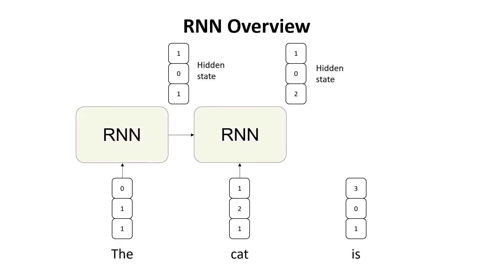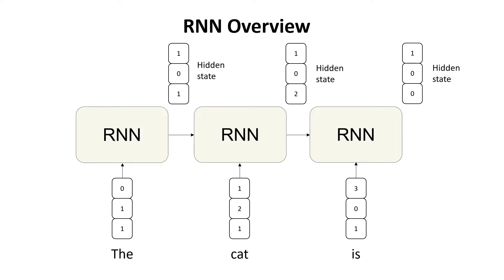This hidden state represents all the information in the sequence until that point. We repeat these steps for all the words in the sequence — we take the hidden state at the second step, run it through the recurrent neural network cell together with the embedding of the third word, and produce the final hidden state. We can use these hidden states for various tasks in natural language processing, like named entity recognition or document classification.